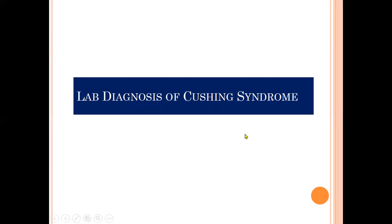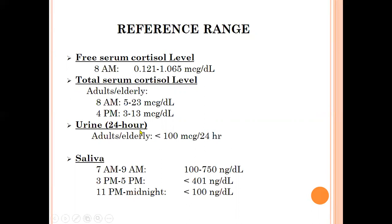For lab diagnosis, three categories of cortisol measurements are used: free serum cortisol at 8 am and midnight, total serum cortisol in blood, and 24-hour urinary free cortisol. Salivary cortisol is also tested at 7 to 9 am and 3 to 5 pm. Reference ranges should be kept in mind, though they are usually provided in exam questions.